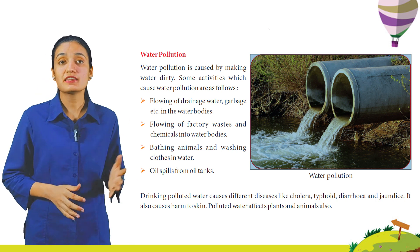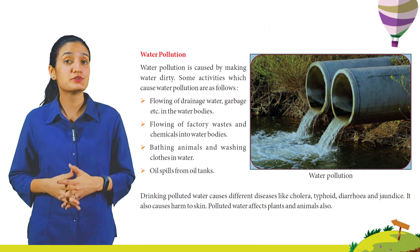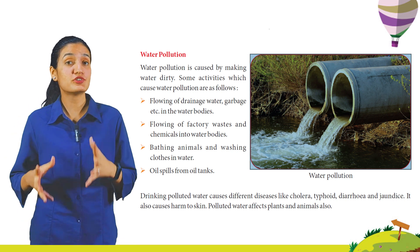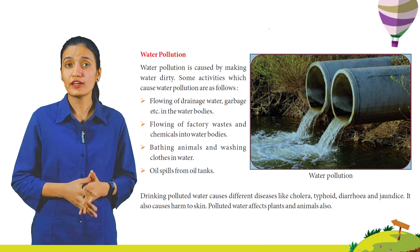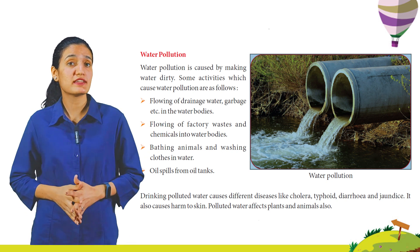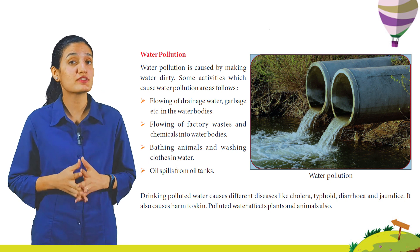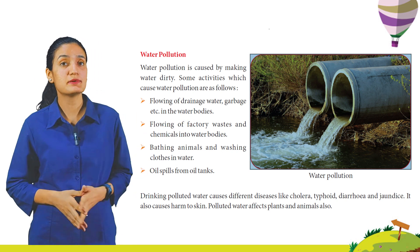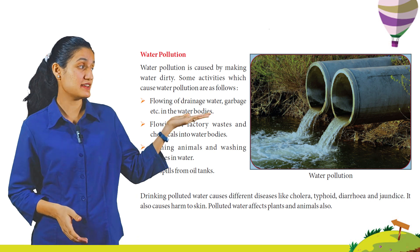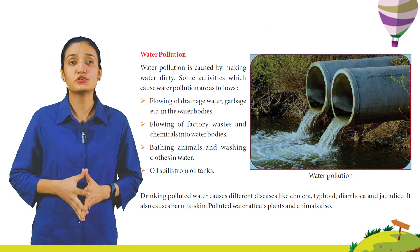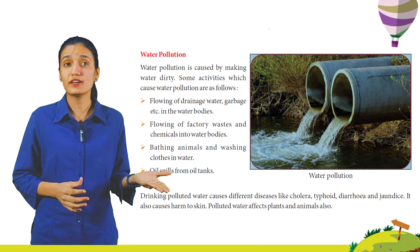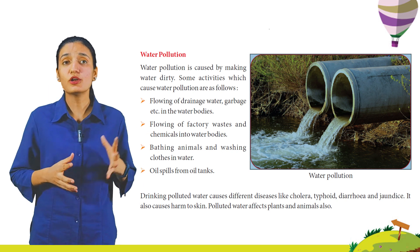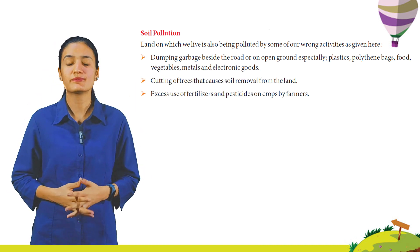Water pollution is caused by making water dirty. Some activities which cause water pollution are: flowing of drainage water and garbage into water bodies, flowing of factory waste and chemicals into water bodies, bathing animals and washing clothes in water, and oil spills from oil tanks. Drinking polluted water causes diseases like cholera, typhoid, diarrhea, and jaundice. It also causes harm to skin and affects plants and animals.